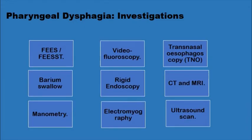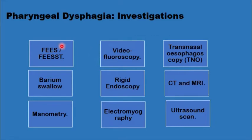Diagnosis is usually established by three key methods: functional endoscopic examination of swallowing (FEES), video fluoroscopy, and transnasal flexible oesophagoscopy under sedation. Other investigations may also be required — barium swallow if there is doubt about a pharyngeal pouch, rigid endoscopy, or CT and MRI scans if there is any suspicion of malignancy or doubt about the final diagnosis.